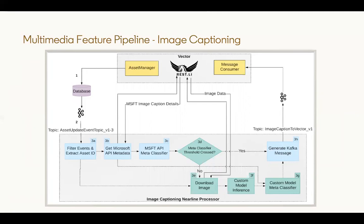A SAMSHA processor then reads this Kafka topic and initiates a download to retrieve the image content. Once it has retrieved the image content, it will either invoke the Microsoft captioning API and/or run TensorFlow inference using a custom model. A text caption is then generated for the uploaded image, and a model called the MetaClassifier is used as quality control on this caption.